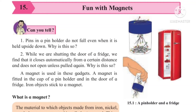I think everyone knows magnets — you have already played with them. Now see the picture here. One picture shows a pin holder. Pins in a pin holder do not fall even when it is held upside down. Why is this so? If we take the pin holder and keep it upside down, the pins do not fall. Why do the pins not fall?